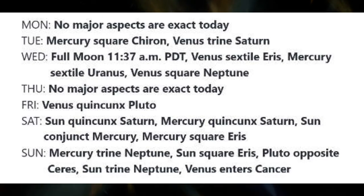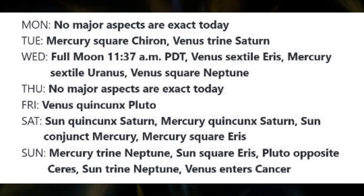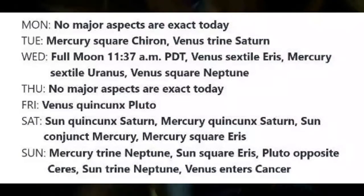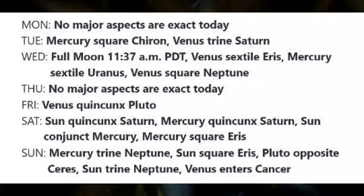On Tuesday, with Mercury square Chiron, we need to be careful of offhand comments, as they can easily result in hurt feelings. But also on Tuesday, Venus is trine Saturn. Relationships of all descriptions are supported with this aspect, helping us feel a deeper connection and commitment.